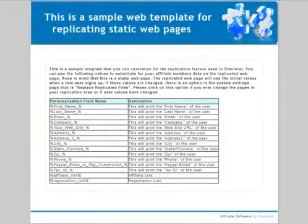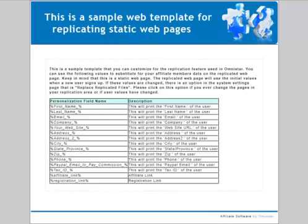Substitution variables for customizing the site can be included. This feature is a powerful way for your affiliate users to advertise your products and services without banner ads, and it gives the affiliate user the option to have their own website. This feature is optional and can easily be turned off.